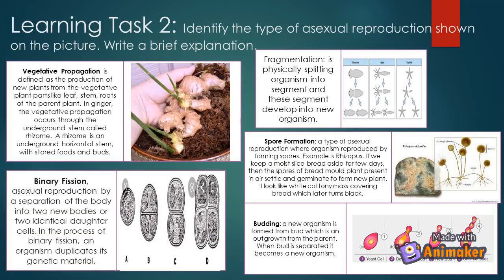Number one: vegetative propagation is defined as the production of new plants from the vegetative parts such as stem and roots of the parent plant. In ginger, vegetative propagation occurs through the underground stem called a rhizome. A rhizome is an underground horizontal stem with stored nutrients and buds. Number two: binary fission is asexual reproduction by a separation of the body into two new bodies or two identical daughter cells. In the process of binary fission, an organism duplicates its genetic material.